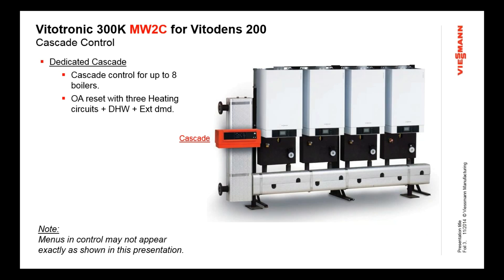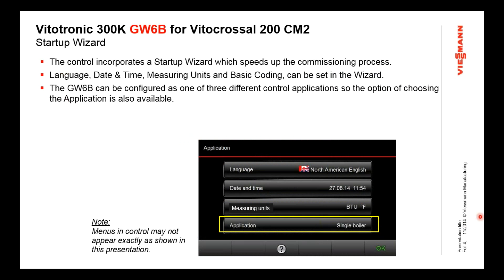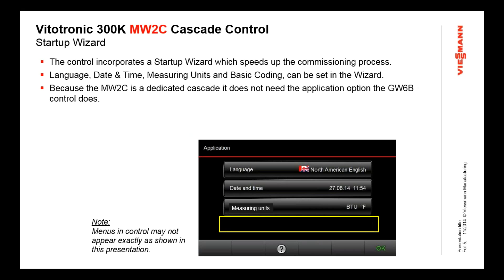In either case, both controls have a very intuitive startup wizard, which makes setting the control up from scratch very easy. As soon as you boot up the control, it goes to the startup wizard screen, which gives you various options. In the GW6B control, it gives you the option of application — where you would set the cascade master, slave, or single boiler control. With the MW2C, because it's just a cascade control, it doesn't have that application option.